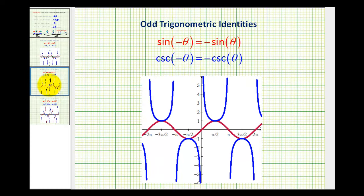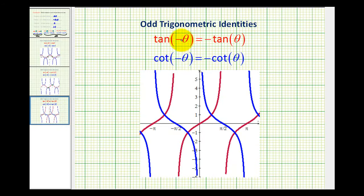Now let's take a look at the odd functions. Here we see the graph of the sine function and cosecant function. Notice f of pi over 2 is equal to positive 1 for both of these functions, but f of negative pi over 2 is equal to negative 1. So if we change the sign of the input, the outputs are the opposite sign. The same is true for the tangent and cotangent function — f of pi over 4 is equal to 1, and f of negative pi over 4 is equal to negative 1. This is true because these functions have symmetry about the origin, meaning if we rotate these functions 180 degrees about the origin, the functions would look exactly the same.